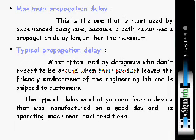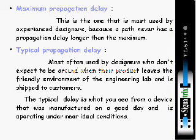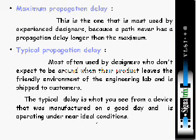Next, typical propagation delay — most often used by designers who don't expect to be around when their product leaves the friendly environment of the engineering lab and is shipped to customers. A typical delay is what you see from a device that was manufactured on a good day and is operating under near ideal conditions. As shown in the NAND gate example, typical means it is considered as an ideal condition — it will work in those near ideal conditions.